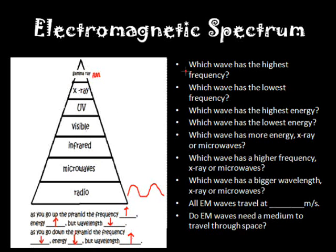So here are some examples. We'll just use these questions to do that. Which wave has the highest frequency? So according to the pyramid, the ones at the top, as you go up the pyramid, the frequencies increase. So the one at the very top of the pyramid are gamma rays. Which wave has the lowest frequency? Well, frequency decreases as you go down the pyramid, so radio waves would have the lowest frequency.